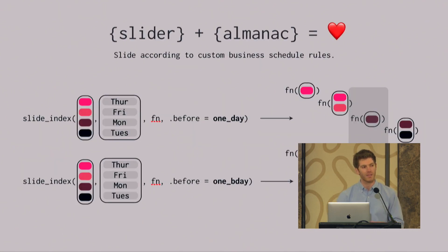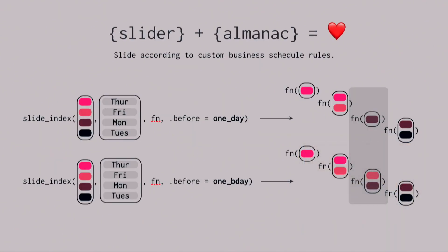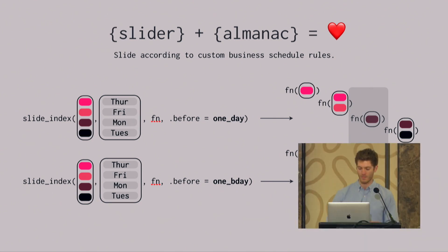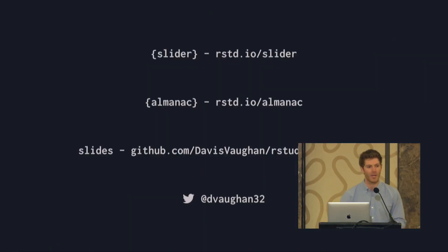Lastly, Slider and Almanac are made to play very well together when you use slide_index in conjunction with these bdays objects. You can say, for example, if I'm on Monday, look back one business day — that creates a range of Friday to Monday, and that gives that nuanced difference in that third function call on the right. That is Slider and Almanac. Thank you.